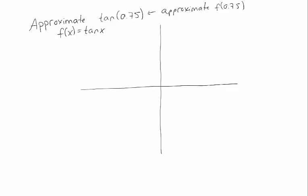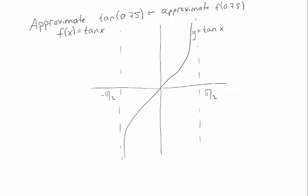Let's remember what tangent looks like — I've drawn the relevant portion here; of course it's periodic. Now 0.75 is the same as 3/4, so it's not too far from π/4. And π/4 is something I can plug into tangent: tangent of π/4 is 1. Sine of π/4 is 1/√2, cosine of π/4 is 1/√2. So π/4 is a point where I can calculate trigonometric values, but 0.75 is not. Let's use π/4 as our easy-to-calculate point A.